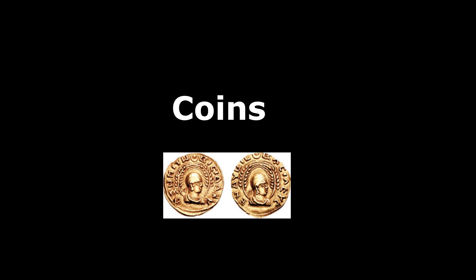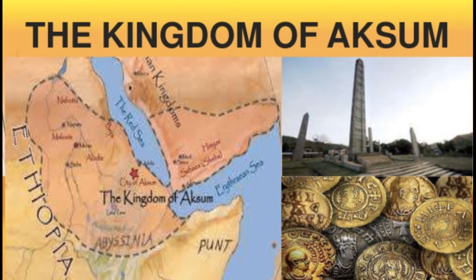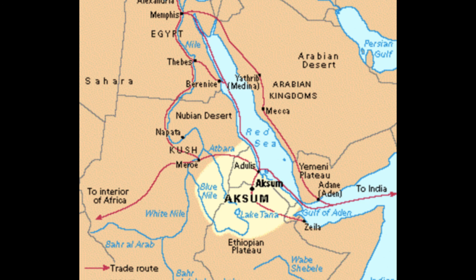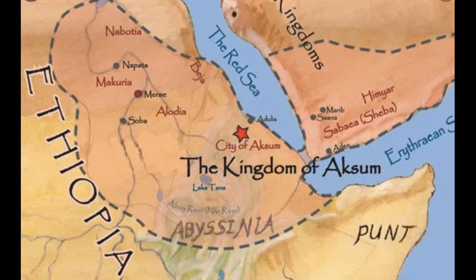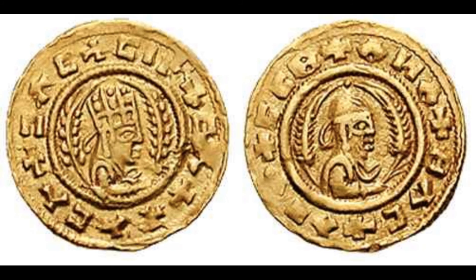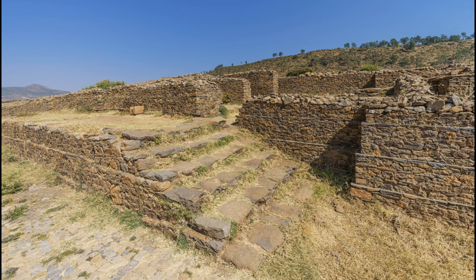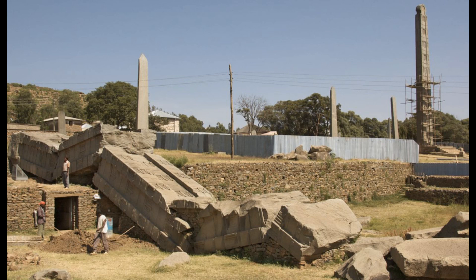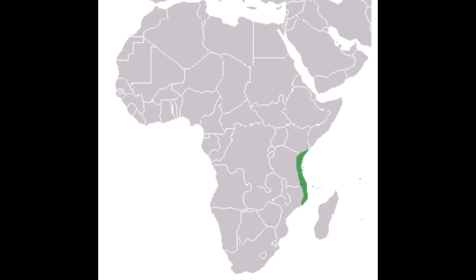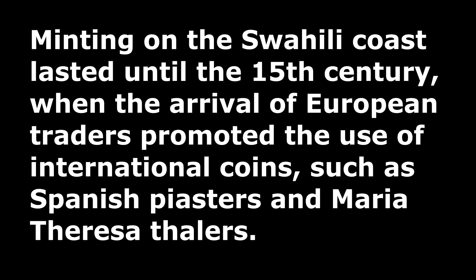The last subject I want to talk about is coins. Archaeological evidence shows that our ancestors minted coins before the arrival of the Europeans. The Kingdom of Axum and the Swahili city-states of the eastern African coast were among the first kingdoms to mint their own coins. The biggest part of the coins exhibited by archaeologists along the coast are copper coins produced in the town of Kilwa. Minting on the Swahili coast lasted until the 15th century, when the arrival of the Europeans promoted the use of international coins such as the Spanish dollar and the Maria Theresa thaler.